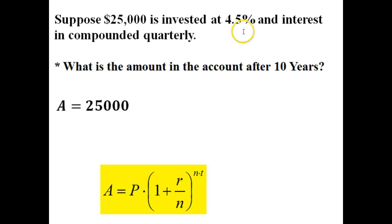1 plus R, R is 4.5%. Remember, we have to convert that to a decimal, so as a decimal that's going to be 0.045, divided by N which is 4, all raised to the N times T. So N is 4 and T is 10. So it should look something like this.